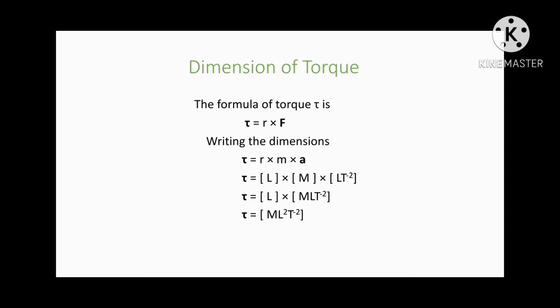...is equal to r multiplied by F. Here, τ shows the torque, r shows the moment arm, and F shows the force. Here you can see that τ and F are bolded. It is because they are vectors, not scalars. We can also write the formula of the torque...